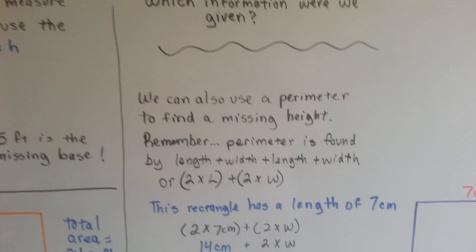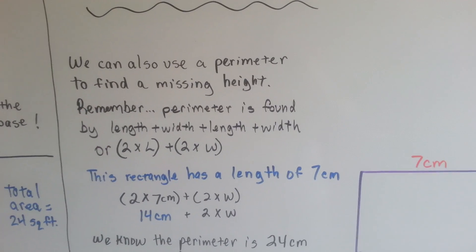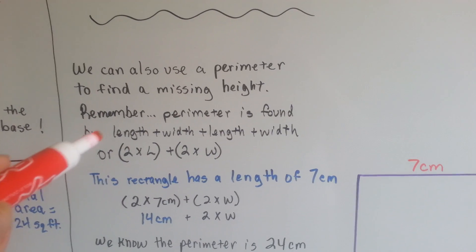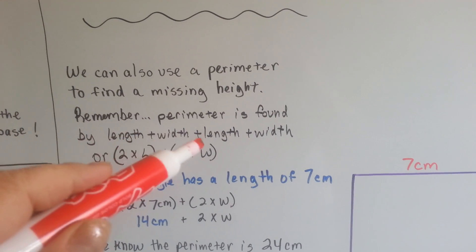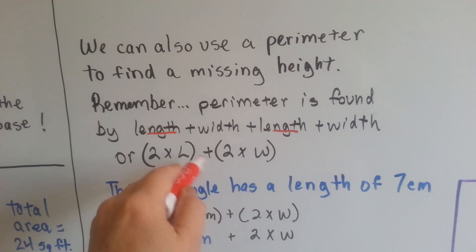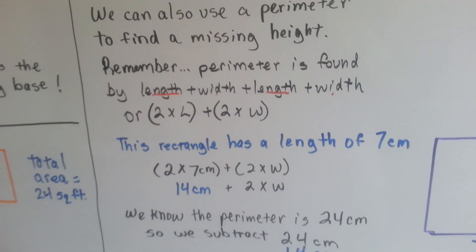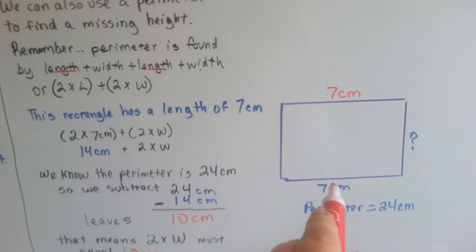Make sure you're paying attention to that. We can also use a perimeter to find a missing height. Remember, a perimeter is found by length plus width and length plus width, or 2 lengths, 2 times the length, plus 2 times the width. This rectangle has a length of 7 centimeters.